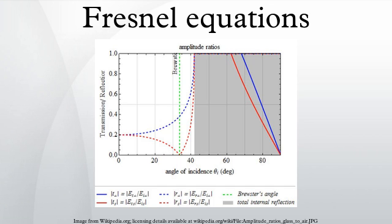Power and intensity equations: In the diagram on the right, an incident light ray IO strikes the interface between two media of refractive indices n1 and n2 at point O. Part of the ray is reflected as ray OR and part refracted as ray OT. The angles that the incident, reflected, and refracted rays make to the normal of the interface are given as θI, θR, and θT, respectively. The relationship between these angles is given by the law of reflection and Snell's law.